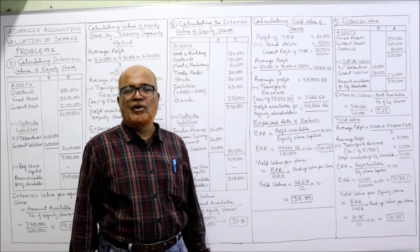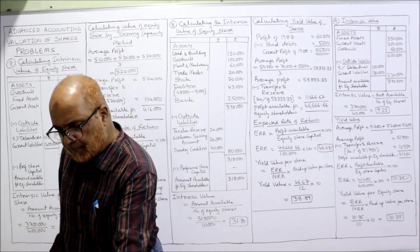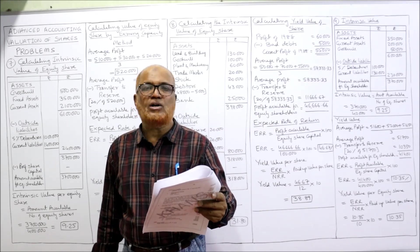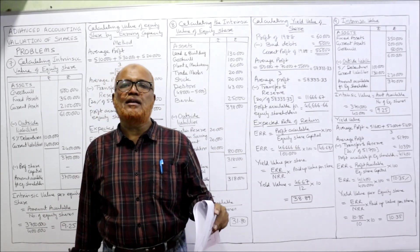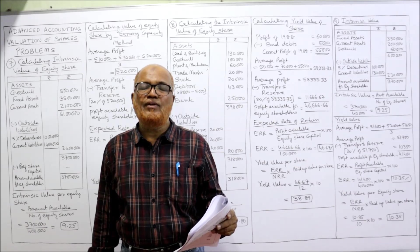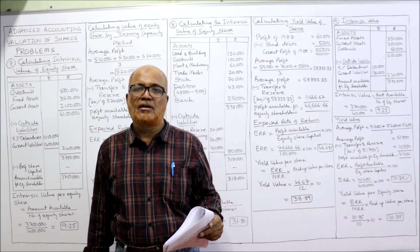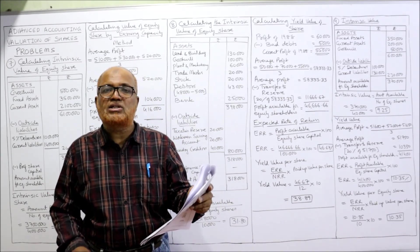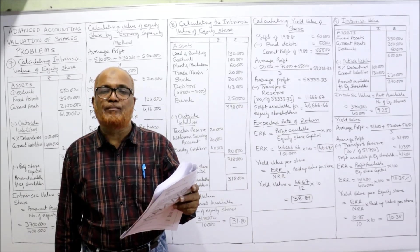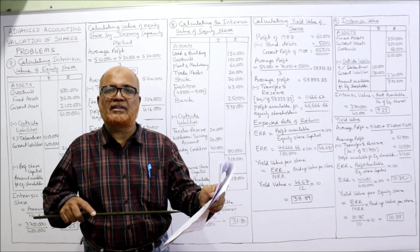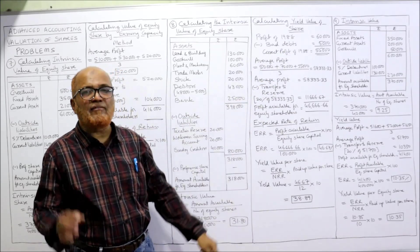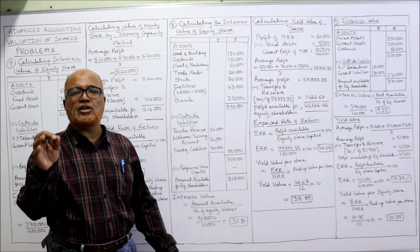Now we have to find out the yield value. For yield value, we need the profits — given for 3 years: 50,000 for 1986, 70,000 for 1987, 60,000 for 1988. But during the current year 1988, there is a revenue loss — the bad debts of 5,000 we cannot recover. So current year's profit 60,000 minus 5,000 bad debts = 55,000. The correct profit for 1988 is 55,000, not 60,000.